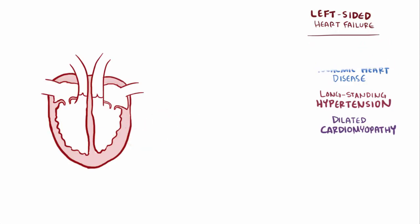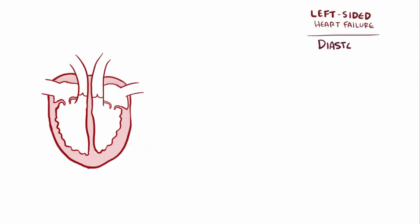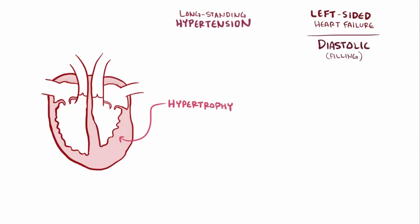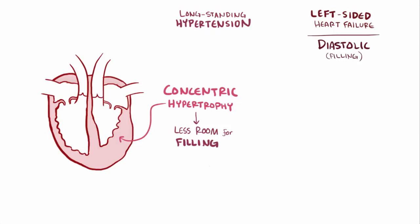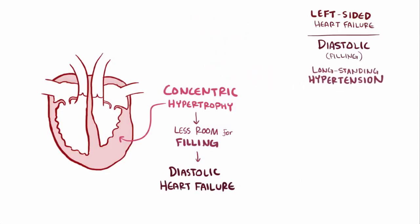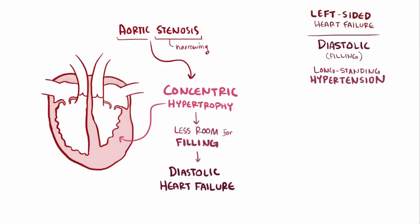Even though systolic failure is most common in left-sided heart failure, diastolic heart failure or filling dysfunction can also happen. In hypertension, the left ventricle hypertrophied, and that hypertrophy is concentric, which means new sarcomeres are generated in parallel with existing ones. As the heart muscle wall enlarges, it crowds into the ventricular chamber space, resulting in less room for blood — meaning that in addition to contributing to systolic dysfunction, hypertension also can cause diastolic heart failure. Concentric hypertrophy leading to diastolic failure can also be caused by aortic stenosis, a narrowing of the aortic valve opening, as well as by hypertrophic cardiomyopathy, an abnormal ventricular wall thickening often from a genetic cause.